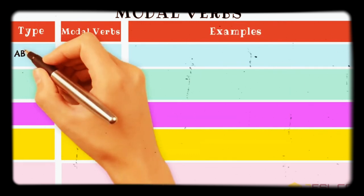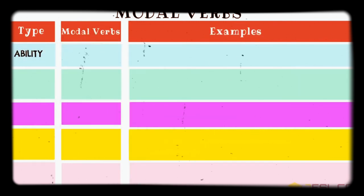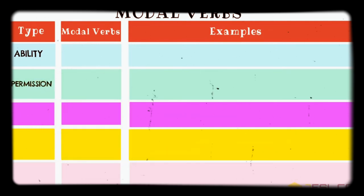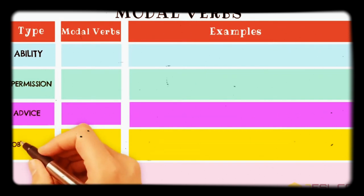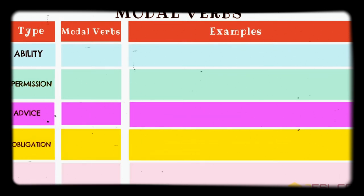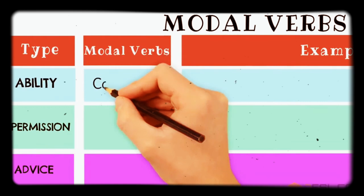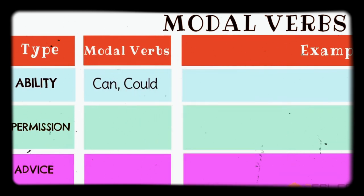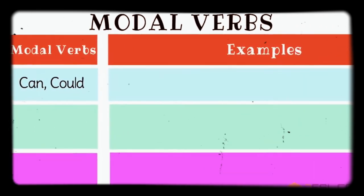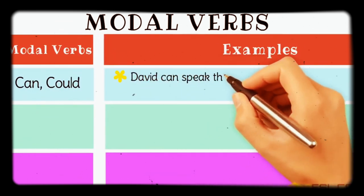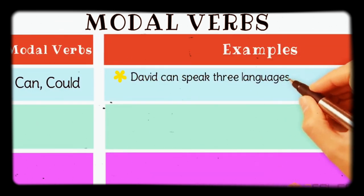There are different types of modal verbs. First is ability — which modal verb should we use with ability? Ability means kabliyat — the capacity to do something or not. It can also be used with inability. For permission, when we seek ijazat, which modal verb should be used? For ability we can use 'can' and 'could'.